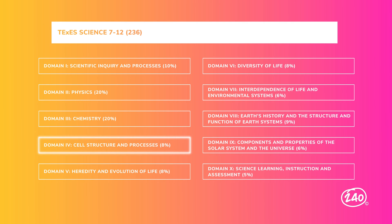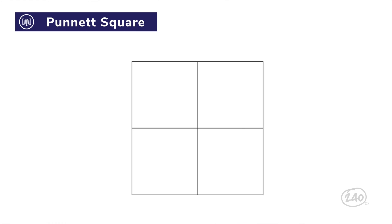Cell structure and processes comes next. There are only four competencies here, which dive into biomolecules and cells. One foundational skill here is Punnett squares. The Punnett square is a type of probability organizer to show each possible combination from the alleles of two parents. To complete a Punnett square for a single trait, draw four boxes in a 2x2 arrangement. Write one parent's genes above the squares, putting one allele above each column. Then write the second parent's genes to the left of the squares, putting one allele to the left of each row.